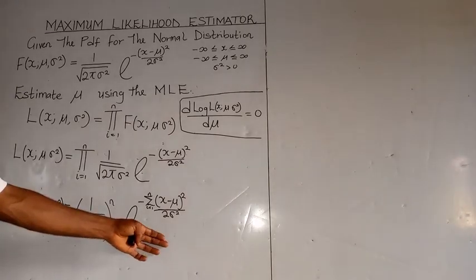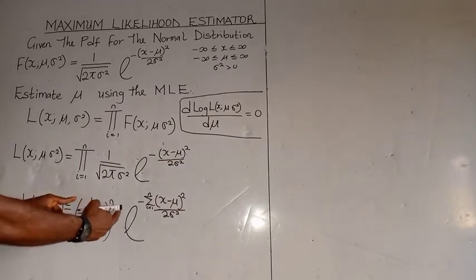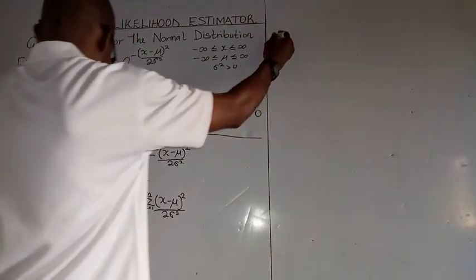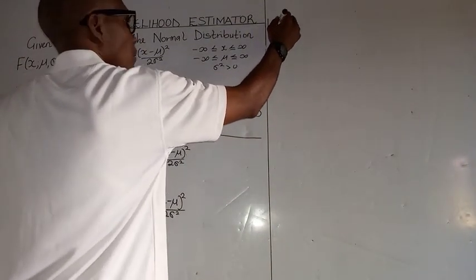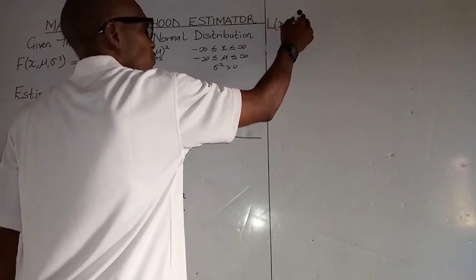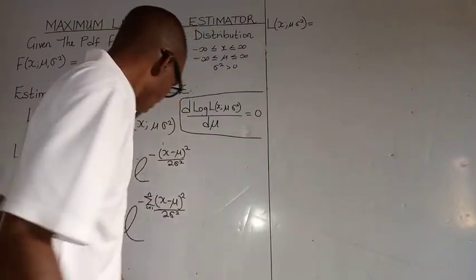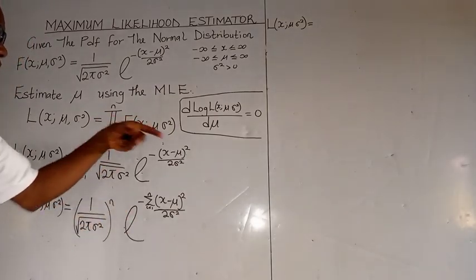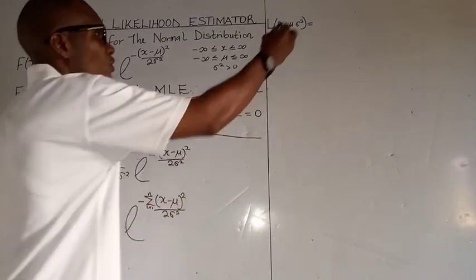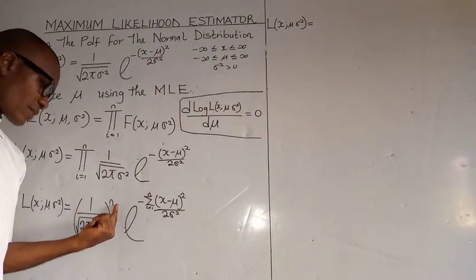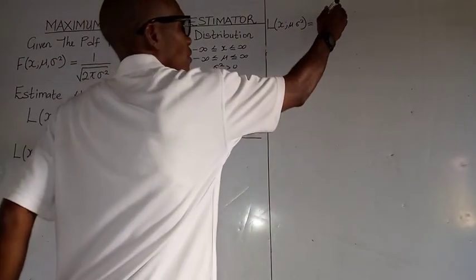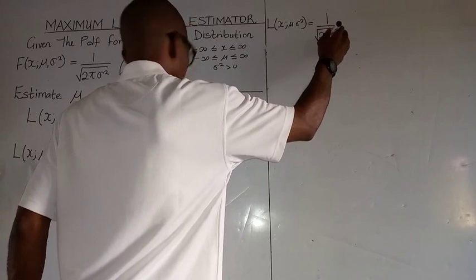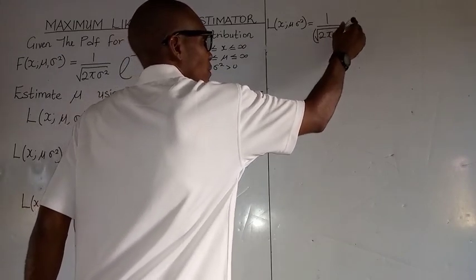We rearrange this first before we take the log. We can see that 1 raised to the power of n is 1. We bring n down, so we have 1 over the square root of 2 pi, and bring sigma down as well.